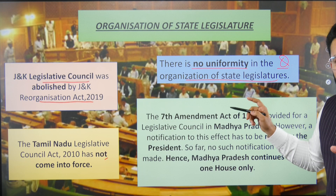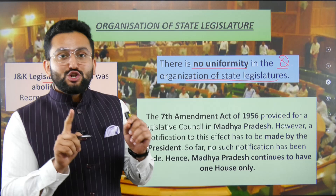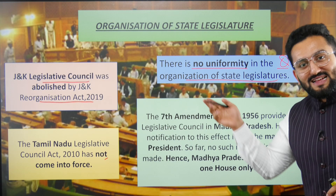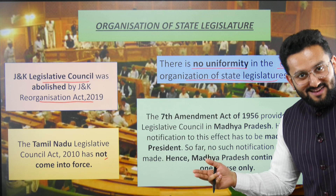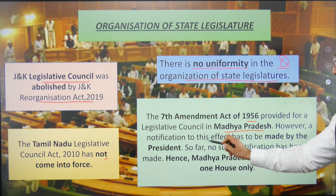If UPSC makes the statement 'there is no uniformity in the organization of state legislature,' you would say true — and that is correct because we don't have bicameral legislature in every state. The 7th Amendment of 1956 provided for a legislative council in Madhya Pradesh, but no notification by the president has been made so far, so Madhya Pradesh continues to have only one house.